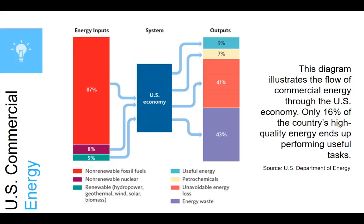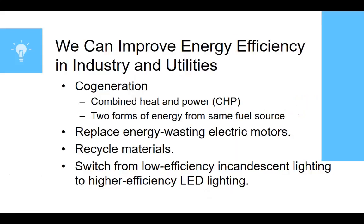Data centers also require a large amount of energy for cooling to keep their servers from overheating. One way to improve this is to save energy by using co-generation, which essentially produces two useful forms of energy from the same fuel source. Steam can be used for generating electricity in a power or industrial plant and can be captured to heat the plant or nearby buildings instead of being released into the environment. The energy efficiency of these systems is about 60 to 80%, compared to 25 to 35% for coal-powered and nuclear plants. Denmark uses co-generation to produce 53% of its electricity — more than any other country — while the U.S. uses it for only about 12%.